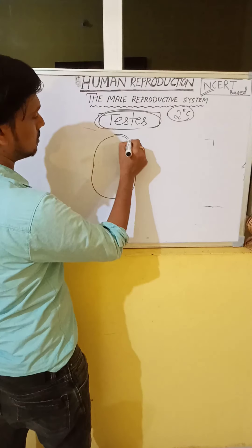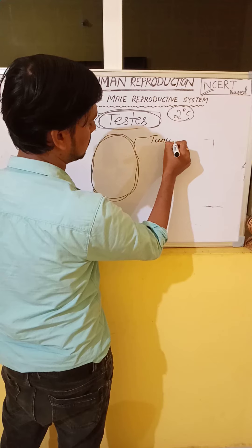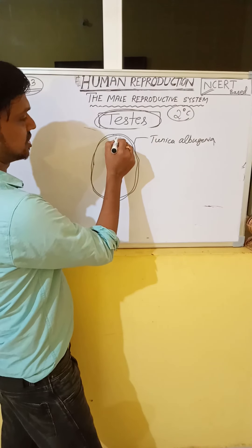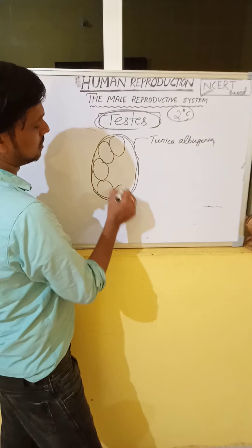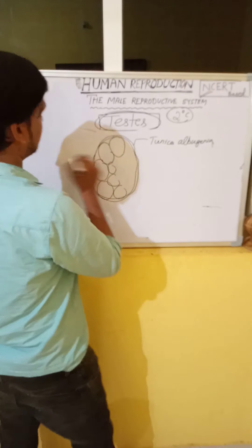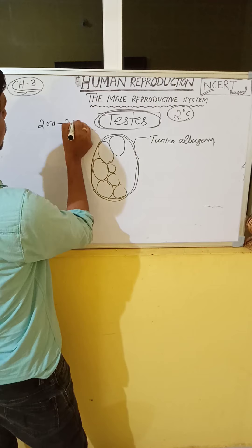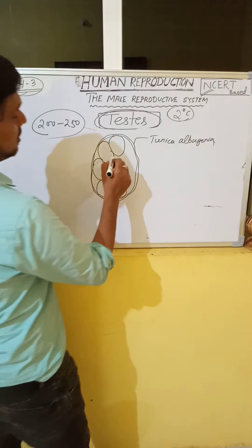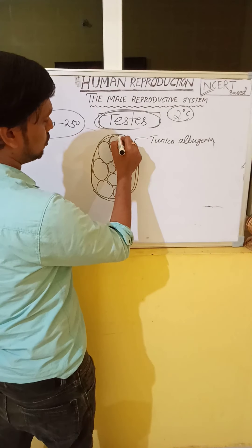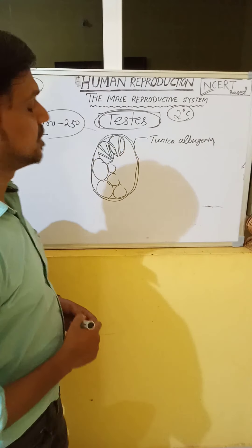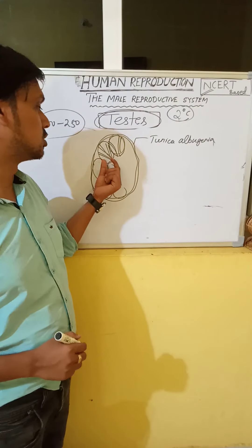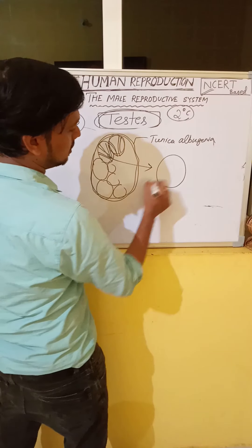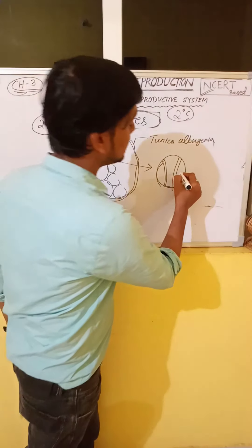Discussing the internal structure of testes: the covering of the testes is called the tunica albuginea. Inside the testes, testicular lobules are present, approximately 200 to 250 in number. Inside each testicular lobule, one to three seminiferous tubules are present. The seminiferous tubules are called the structural and functional unit of the testes.